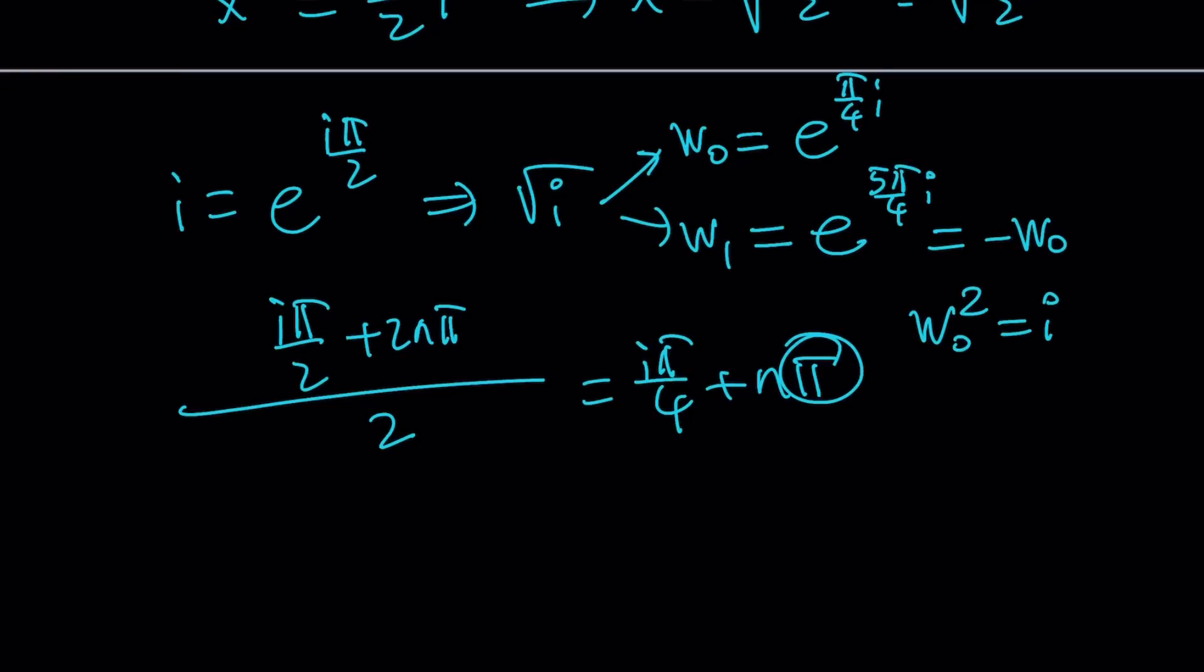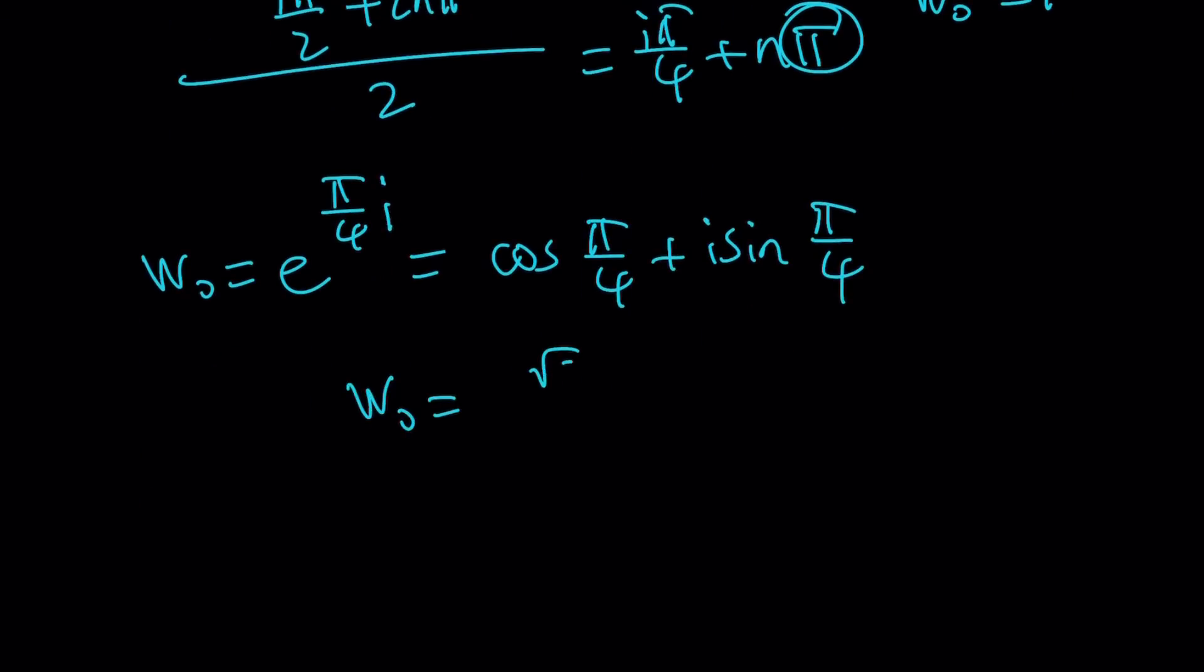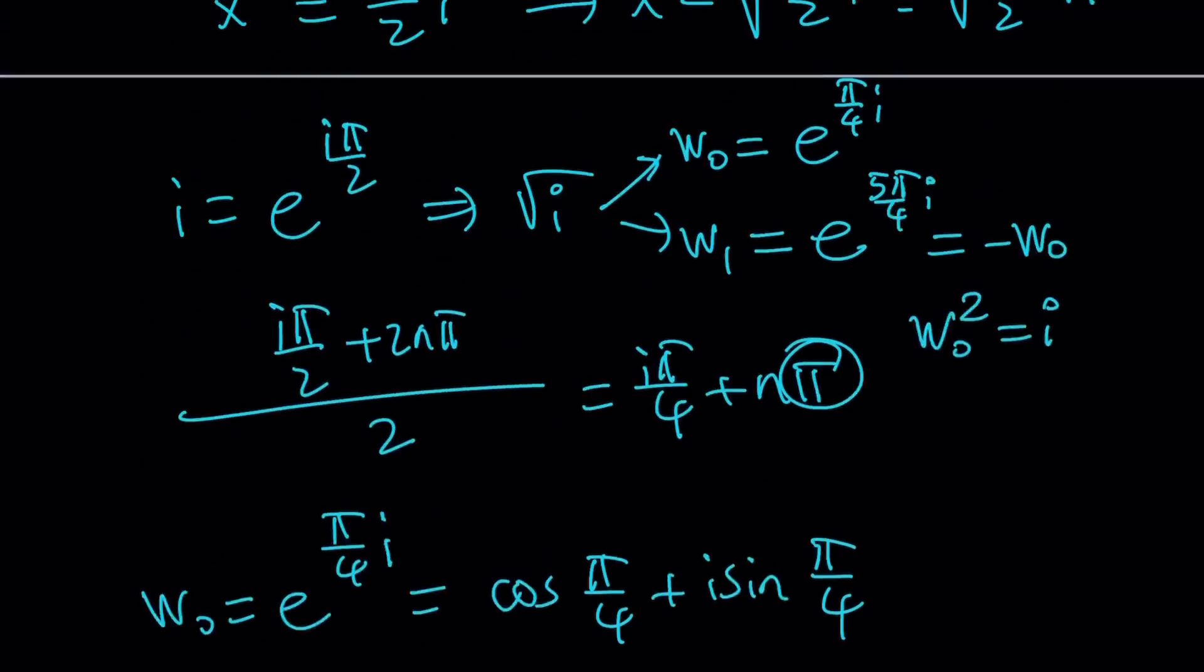We kind of got the idea of w zero, but let's go ahead and turn it into an a plus bi form. What is w zero? It is e to the power pi over 4i, and then I can write it as cosine—by the way, since the modulus was 1 for i, its square roots are also going to have the same modulus, the square root of 1 which is 1. So we can write it as cosine pi over 4 plus i sine pi over 4, and now we can replace cosine pi over 4 with square root of 2 over 2, and sine is going to be the same. This is going to be w zero, but this is just the square root of i.